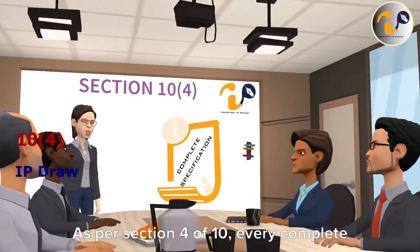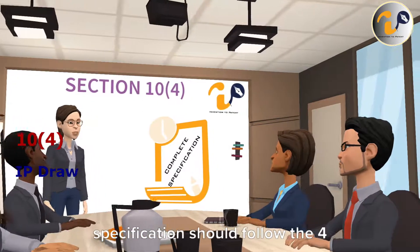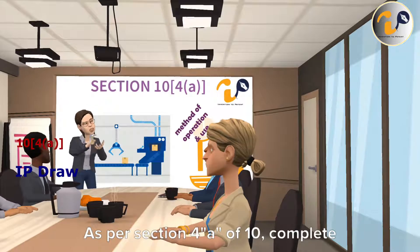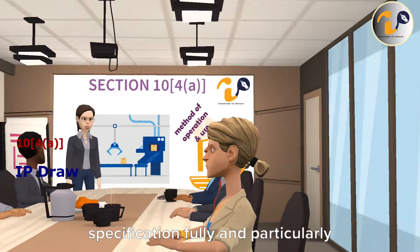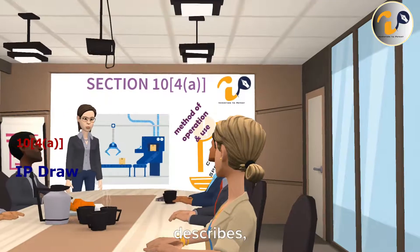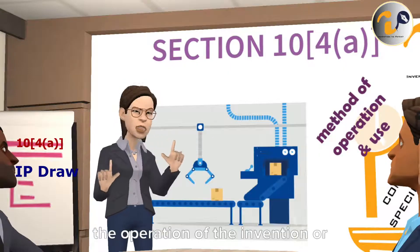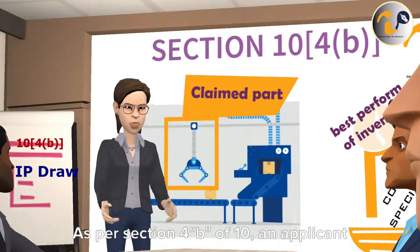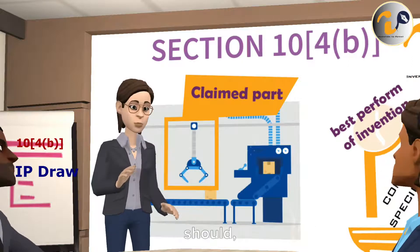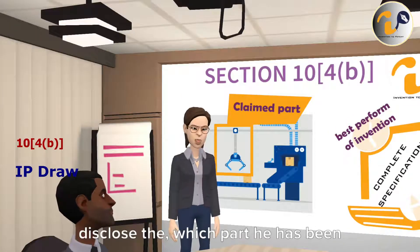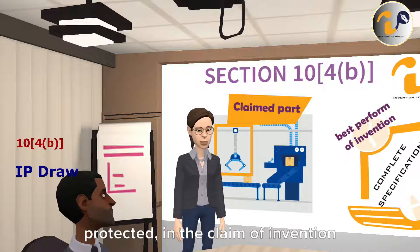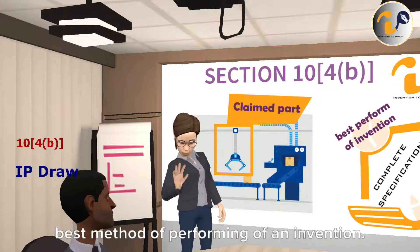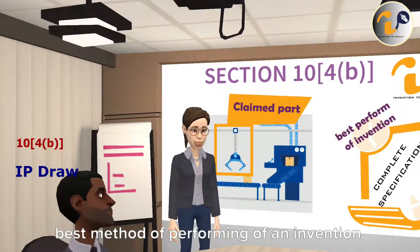As per Section 10(4), every complete specification should follow four sections. The complete specification fully and particularly describes the operation of the invention or its use and method. An applicant should disclose which part has been protected in the claim of the invention and should disclose the best method of performing the invention.